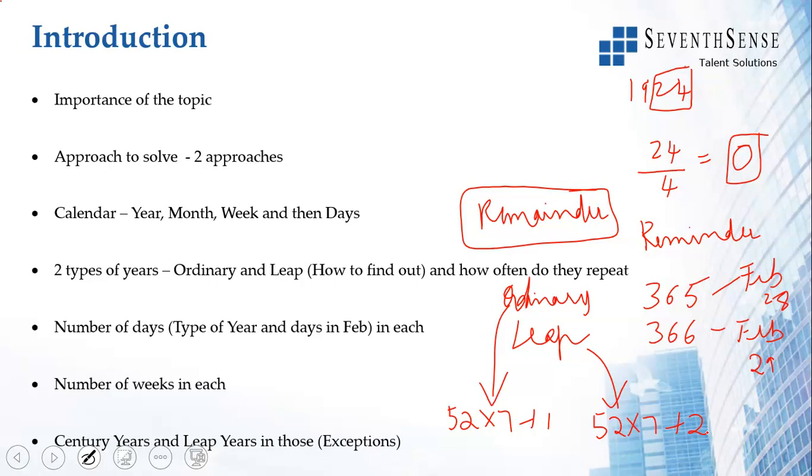Now there is something known as a century year. We said that if you divide the last two digits by 4, if it has 0 as the remainder, it is leap. Century years are years which the last two digits are 0. So you have 1600 century year, 1700 century year, 1800 century years. How do you know which are the leap years? For century years, if the last two digits are 0, you divide it by 400. When you divide it by 400, if the remainder is 0, then leap.